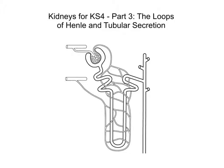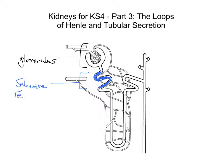As a recap: in part one we talked about structure and function and labelled parts of the diagram. In part two we talked about ultrafiltration happening in the upper part, in the glomerulus. Then in the proximal convoluted tubule we got selective reabsorption, where the filtrate passed through the glomerulus and we recovered glucose, amino acids, etc. This video is going to pick up with what happens next.